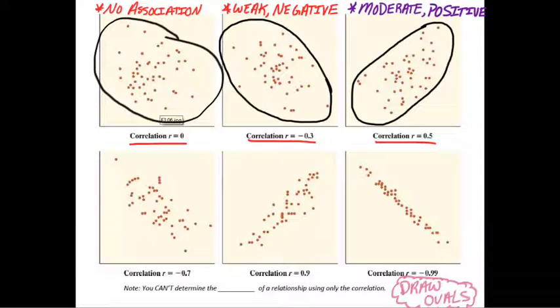Notice the commas I'm putting between these. Weak, negative, moderate, positive. I'm not describing negative and positive. I'm saying there's a weak association or there's a moderate association, and then I'm saying the direction. So they're separated by commas.